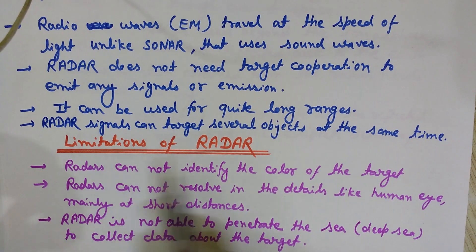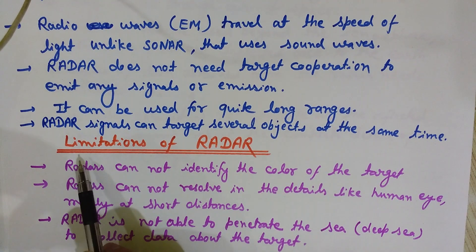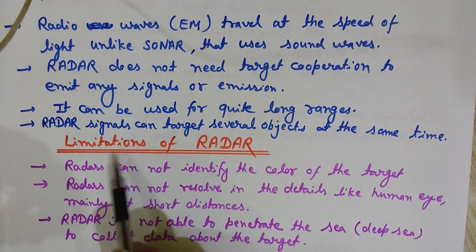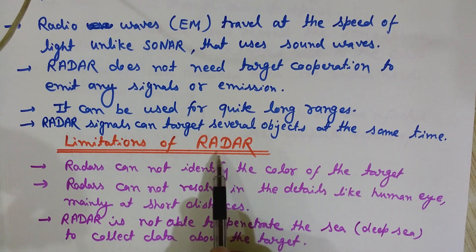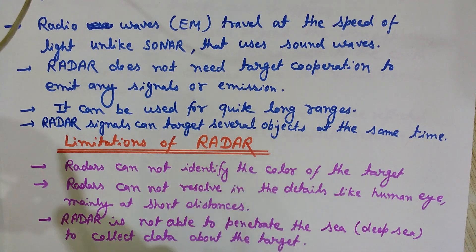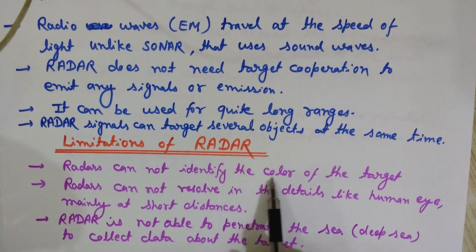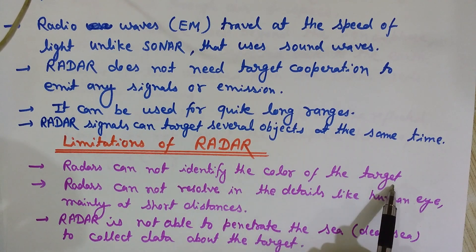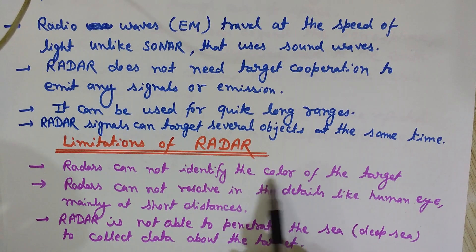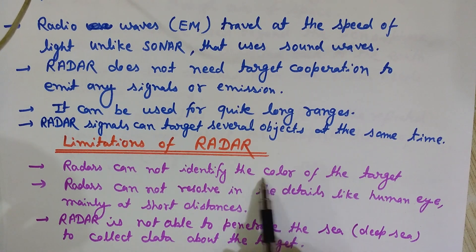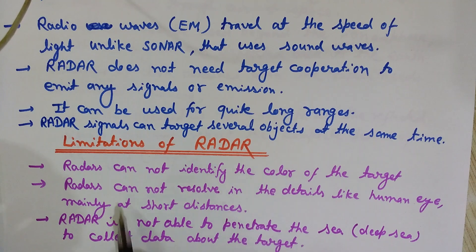Now we will discuss some limitations or disadvantages of radar. First, radar cannot identify the color of the target — no information about color can be obtained with the help of radar.